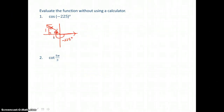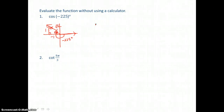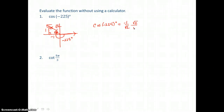We label the sides of the special triangle in the ratio 1, 1, square root of 2. Since we went left of the origin, that leg is negative. Up is positive, so that leg stays positive. The hypotenuse is always positive. Applying the definition of cosine — adjacent over hypotenuse — gives negative 1 over the square root of 2. Rationalizing the denominator by multiplying by square root of 2 over itself, our answer is negative the square root of 2 over 2.